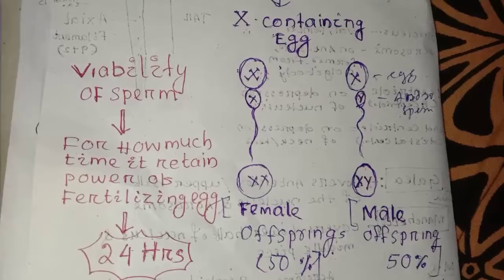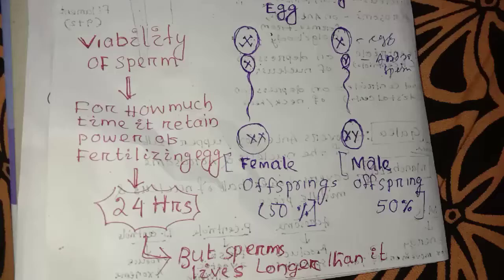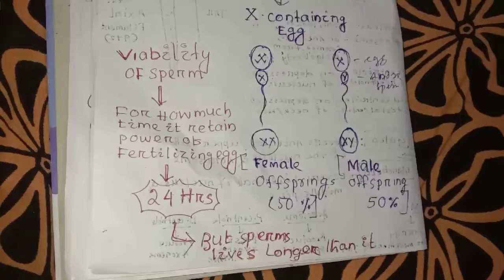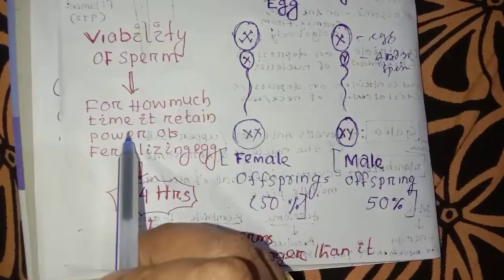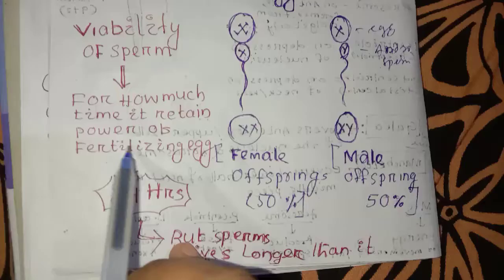Sperm production and the power of fertilizing the egg — how much time the sperm retains its fertilizing power. It can remain viable for up to 24 hours.